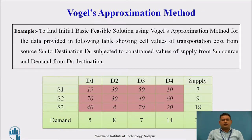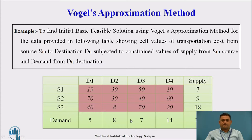This is the problem for solving the transportation problem by the VAM method. Before starting, we have to check whether the given problem is a balanced type or unbalanced type. This is a balanced type because the summation of 5 plus 8 plus 7 plus 14 is 34, and the summation of 7 plus 9 plus 18 is also 34. The supply and the demand are equal, so it is a balanced transportation problem.